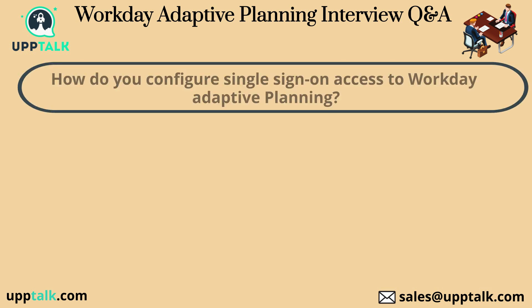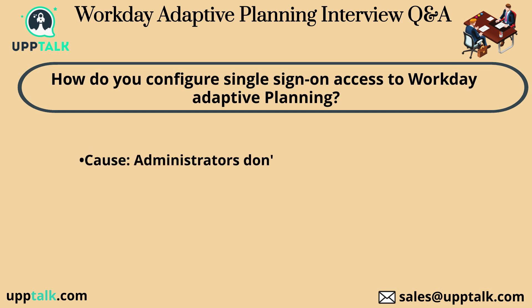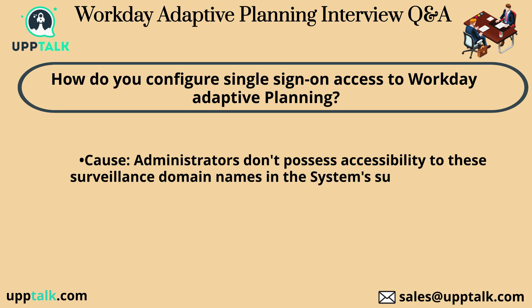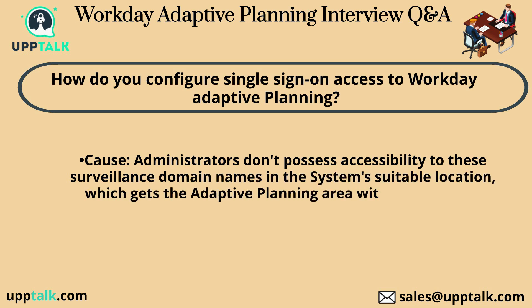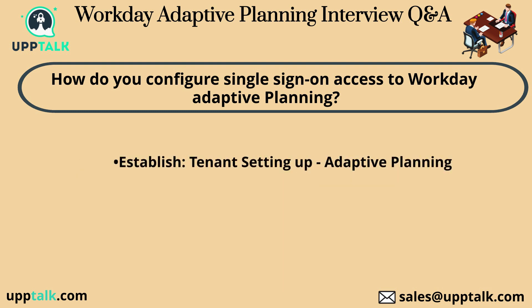How do you configure single sign-on access to Workday Adaptive Planning? Core administrators don't possess accessibility to these surveillance domains in the system's suitable location, which covers the adaptive planning area within the tenant configuration document. Steps include: Establish tenant setup for adaptive planning, and establish tenant setup for general configuration.